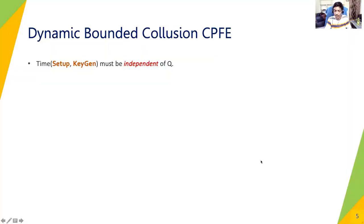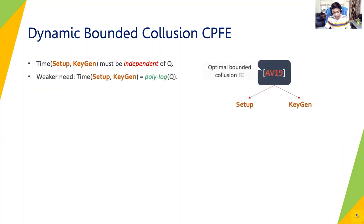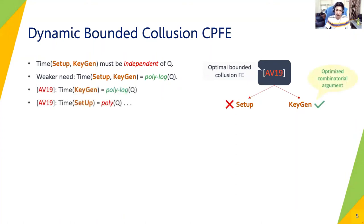Thank you Monashij for describing the roadmap at a high level. We now start describing the details of our CPFE scheme in the dynamic bounded collusion model. A first observation is that it is necessary to make setup and keygen independent of the collusion bound Q. Let's first consider a weaker requirement with setup and keygen being polylog in Q. A recent construction from AV19 satisfies one half of this requirement: using an elegant combinatorial argument, their keygen is only polylog in Q. However, their setup is still polynomial in Q. Our first step is to reduce its dependence on Q from the setup algorithm.